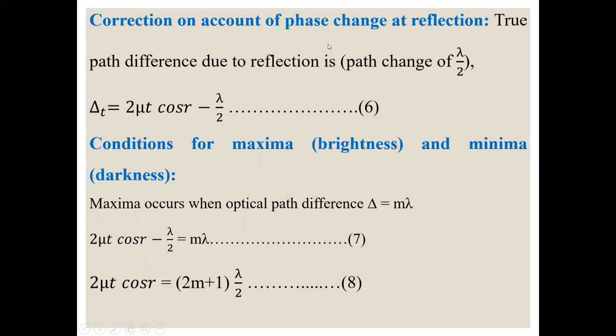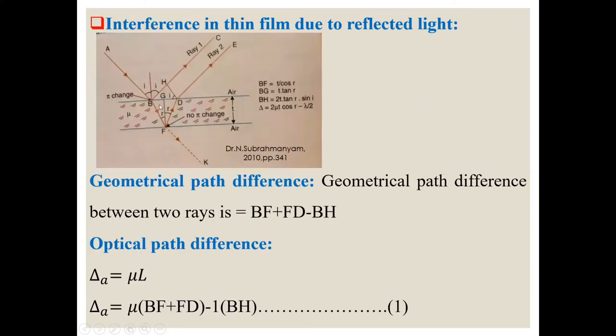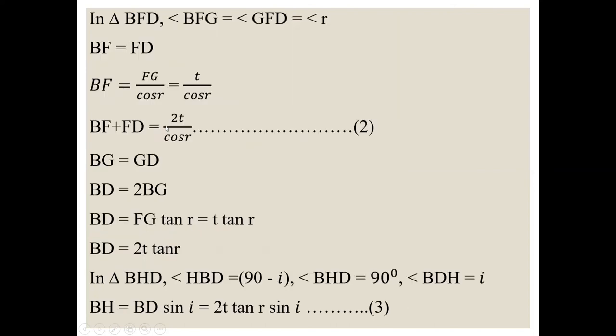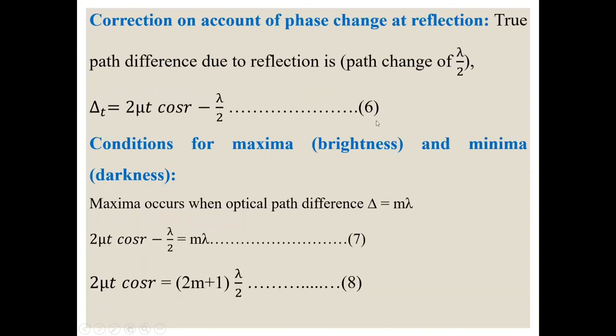So correction on account of phase change at reflection. The path difference due to reflection is phase change of lambda by 2. See here, here there is pi change, here no pi change. And optical path difference, a phase change of lambda by 2 is considered here. So delta is equal to 2 mu t cos r minus lambda by 2.